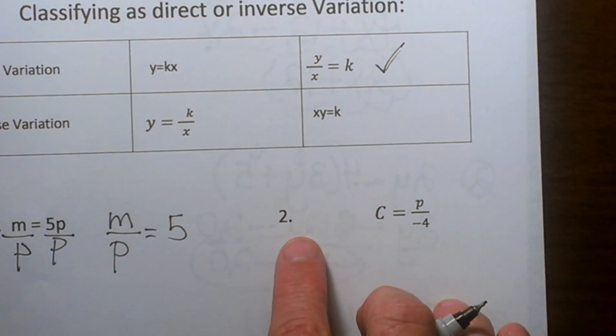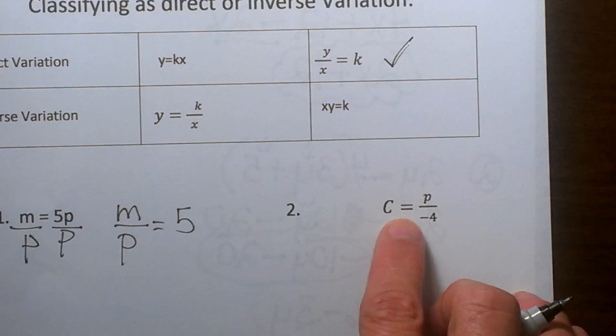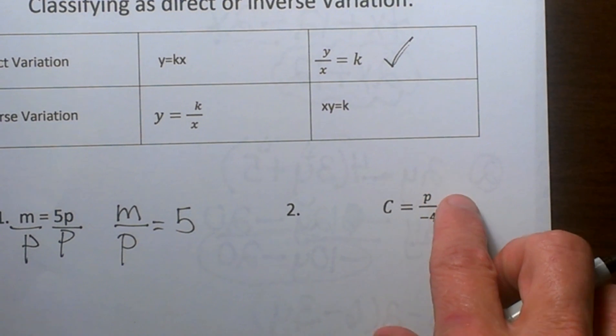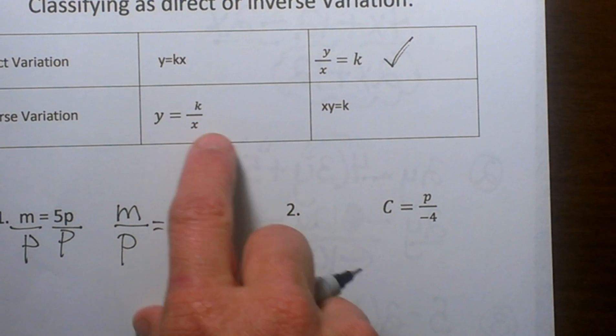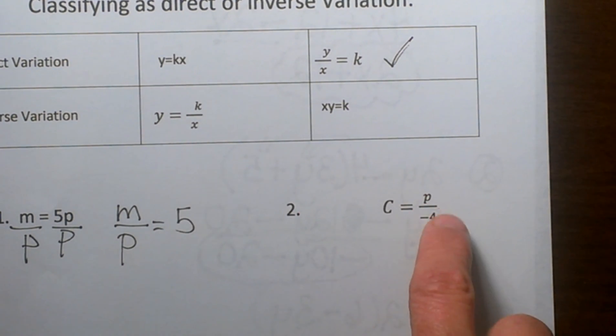Okay so let's look at our second one over here. We have c is equal to p over negative 4. Well we have a fraction so it kind of looks like this, but be careful because where is our constant? This time our constant is on the bottom not on the top.